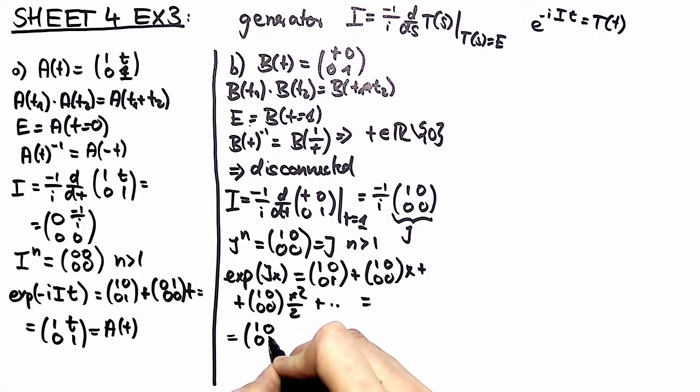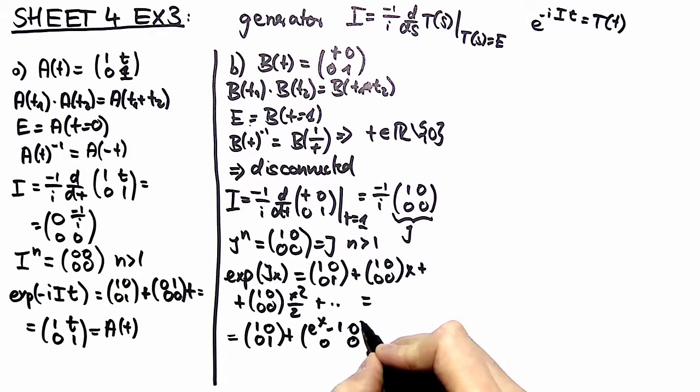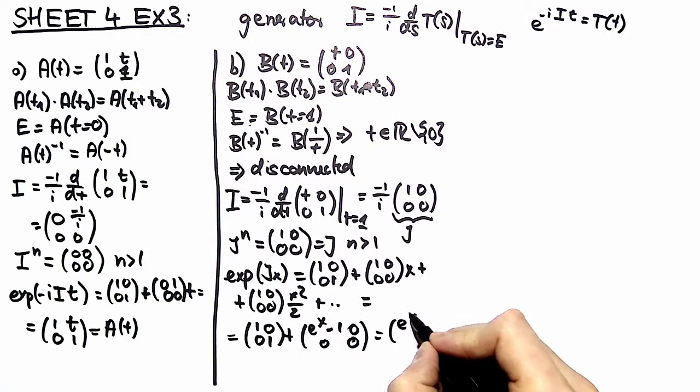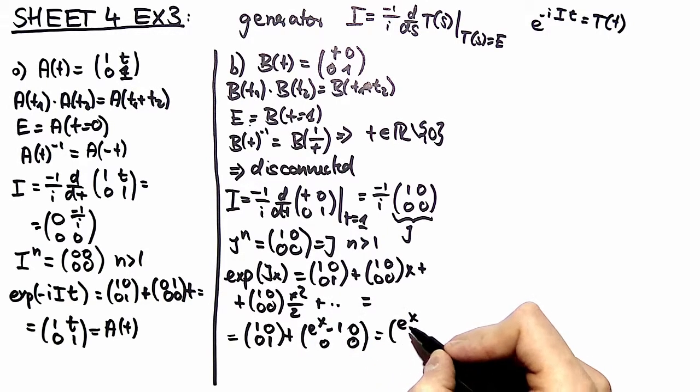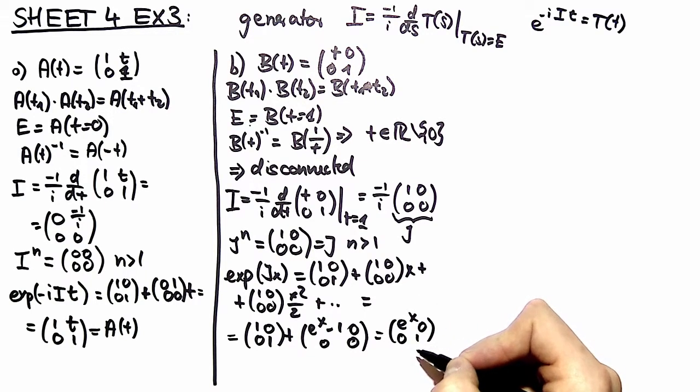So what do you have? You have the identity matrix plus an exponential function where the identity element is left out and every other element is 0. So you have e to the x on the upper left corner of this matrix and you have a 1 on the lower right corner.